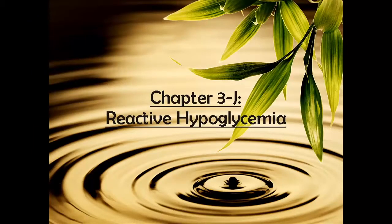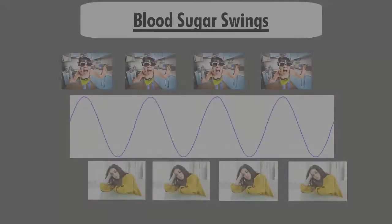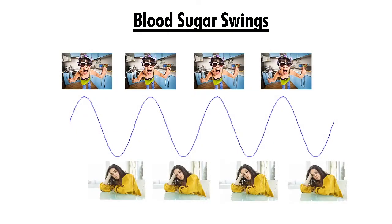Reactive hypoglycemia. What looks like bipolar, schizoaffective, or a mood disorder can also be attributed to blood sugar issues. There is a type of hypoglycemia that often defies detection, reactive hypoglycemia.